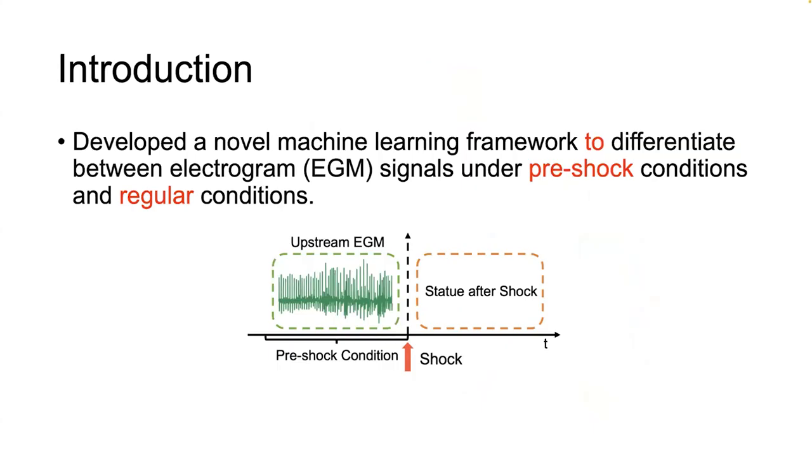To address this issue, we developed an innovative machine learning framework to identify the EGM segments which suggest a potential shock. Our framework aims to classify EGM signals into one of two classes: the normal healthy segments and the segments which suggest a potential shock. As shown in this figure, our approach analyzes signals from before a shock, which we call upstream signals, and from normal conditions, which we call presenting signals. The method is crucial for predicting shocks using signals at an early stage.